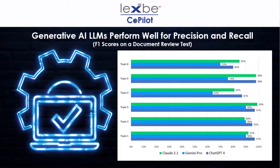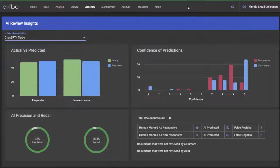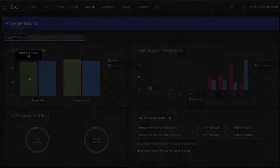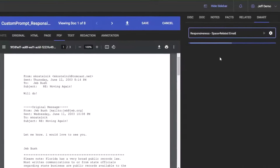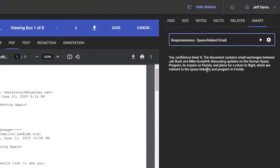ChatGPT and other GenAI models like Claude 2 score well on performing a first-pass document review for responsiveness. Here are the F1 scores for a test that we ran with three of the most prominent large language models. ChatGPT consistently performed well. With LexBee Copilot, you can create multiple virtual ChatGPT document reviewers that can review thousands of documents an hour and code them for responsiveness. This will help you dramatically reduce the cost of document review, meet deadlines in document-intensive cases, and give you the time to build a strong case. One important aspect of using GenAI LLMs for document review is that they can provide you with their rationale as to why a document is responsive or non-responsive, and they will also generate a confidence score which will streamline the process of quality control.